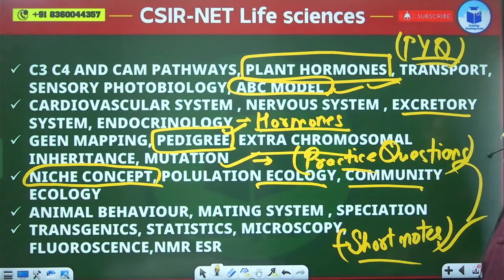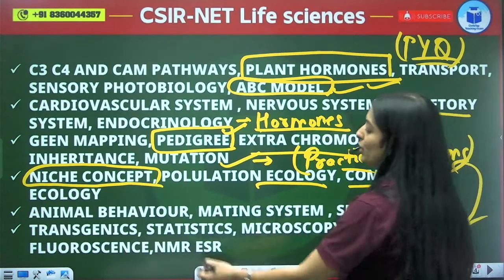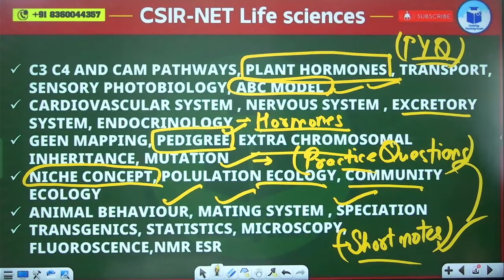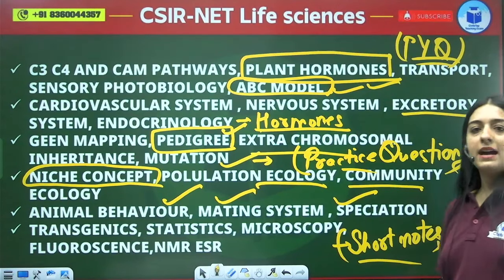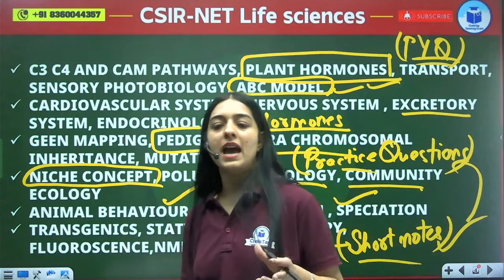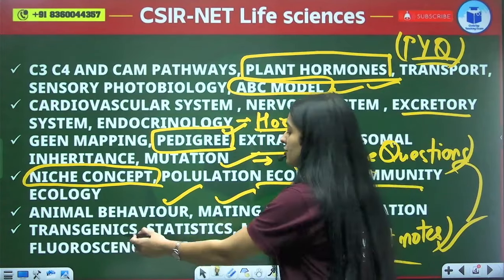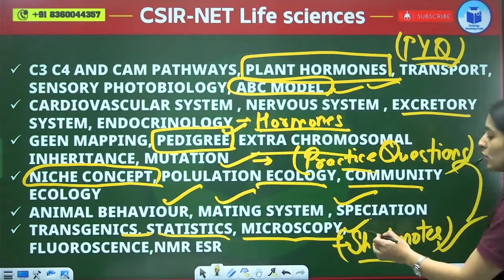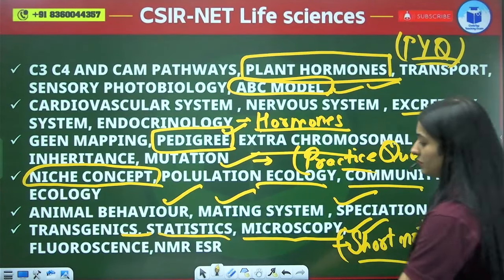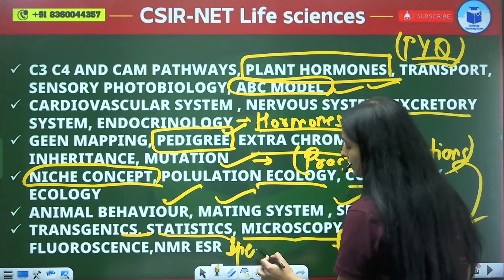Animal behavior, evolution, and mating species — questions definitely come from here. The last units — Units 12 and 13 combined — cover transgenic statistics, fluorescence, NMR, ESR, and spectroscopy. These are also important topics to cover.